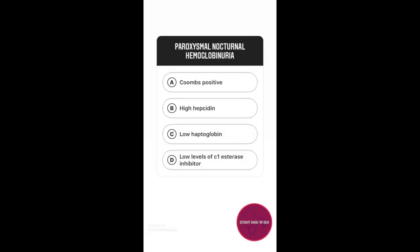Question number 3. Which of the following is correct with respect to paroxysmal nocturnal hemoglobinuria? Option A, Coombs positive. Option B, high hepcidin. Option C, low haptoglobin. Option D, low levels of C1 esterase inhibitor. The answer to this question is low haptoglobin.